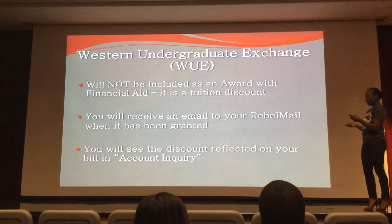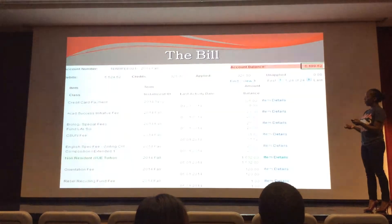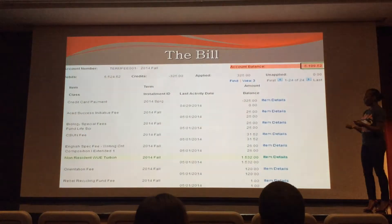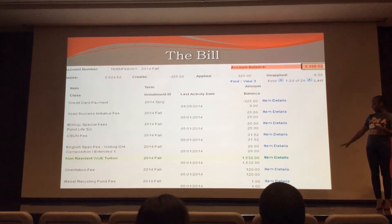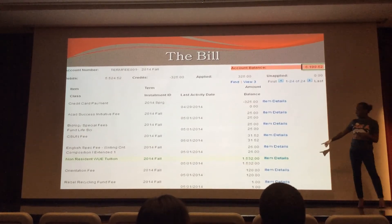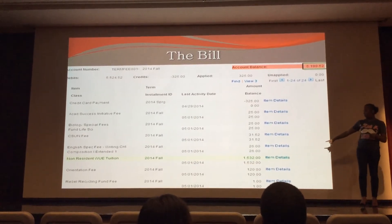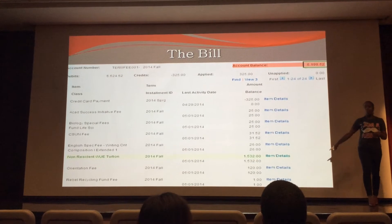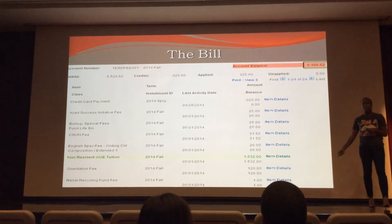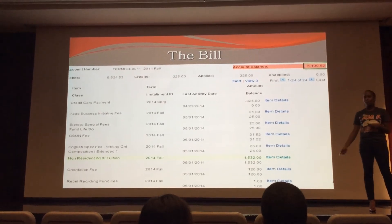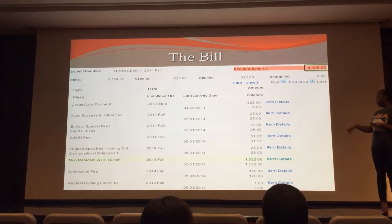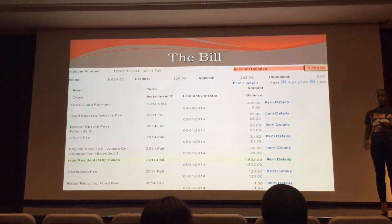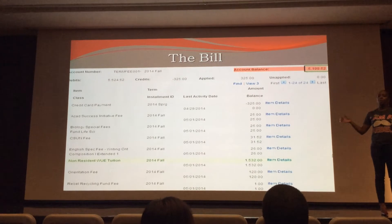If they are offered the WUI, where you see the award show up will be on their bill. Here you see a non-resident WUI tuition. The non-resident fee is normally $69.55, but because this student was awarded the WUI, they're paying $15.32 — a big discount.